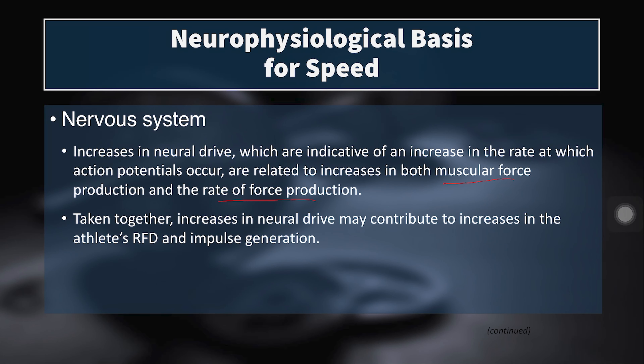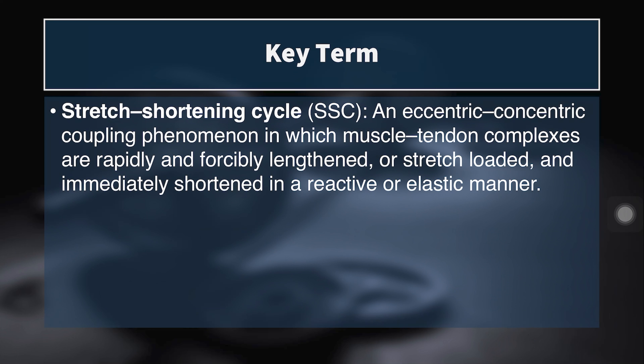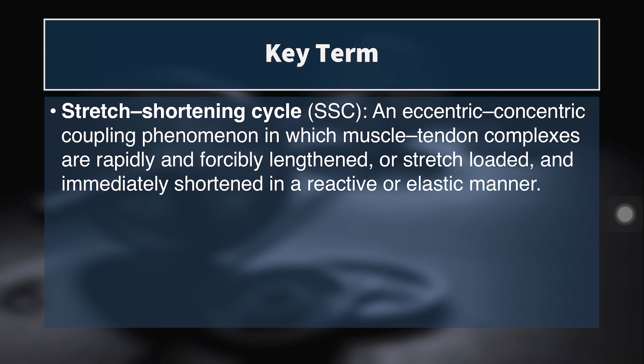Taken together, an increase in neural drive may contribute to increases in an athlete's RFD and impulse generation. This will have implications later when we discuss training interventions to enhance speed and change of direction performance. We also have to remember that the stretch shortening cycle plays a huge role in sprinting and change of direction. From chapter 18 on plyometrics, the stretch shortening cycle is an eccentric-concentric coupling phenomenon in which the muscle-tendon complex is rapidly and forcibly lengthened under load and then immediately shortened in a reactive or elastic manner.